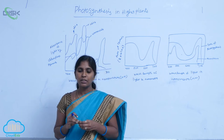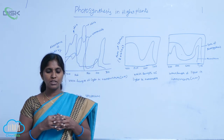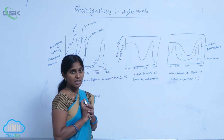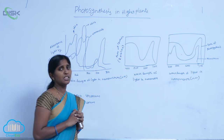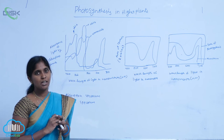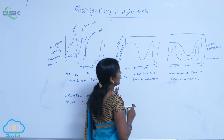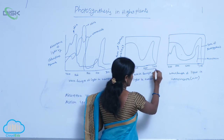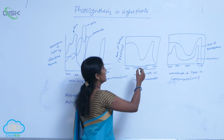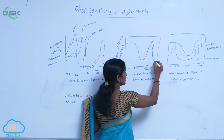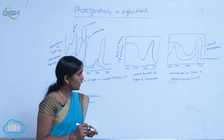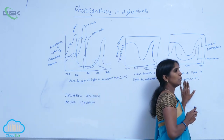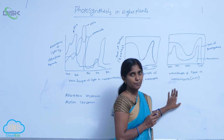Action spectra is the graph showing the rate of photosynthesis according to the wavelength of light in nanometers. The rate of photosynthesis is calculated by the releasing of O2. According to the releasing of O2, the photosynthetic yield is calculated. At the wavelength of 600 to 700 nanometers, the photosynthetic yield is very high, represented by red and blue lights. This is the diagram of both spectra — action as well as absorption spectra.